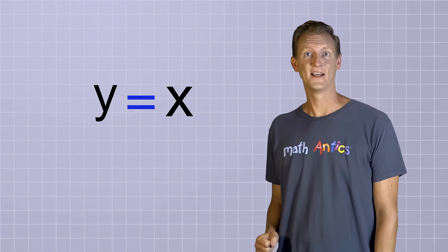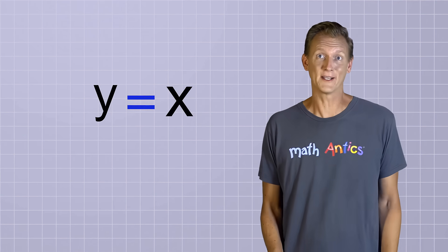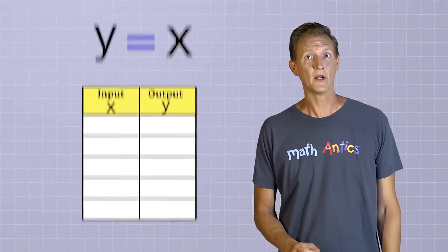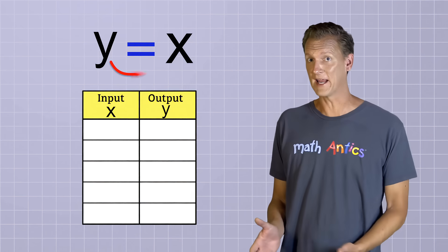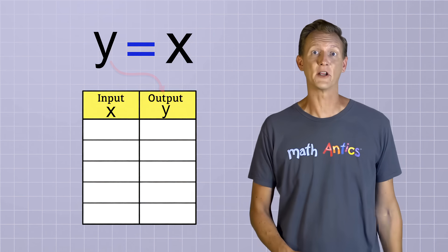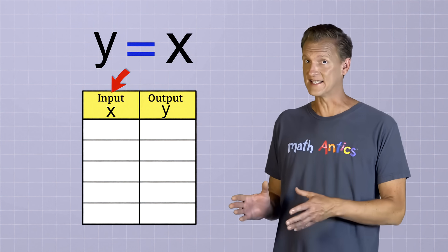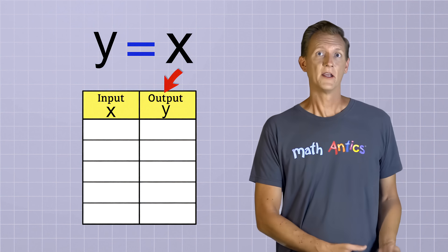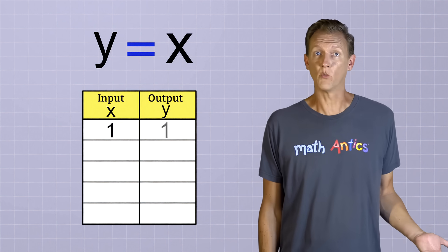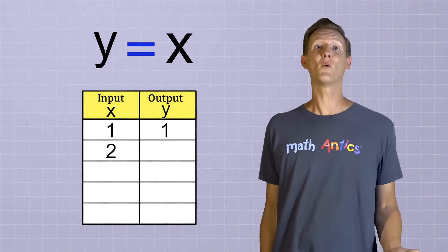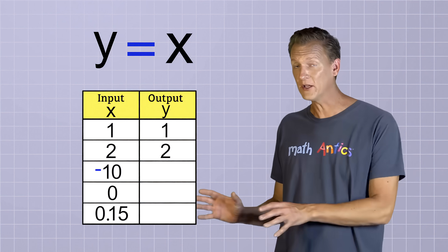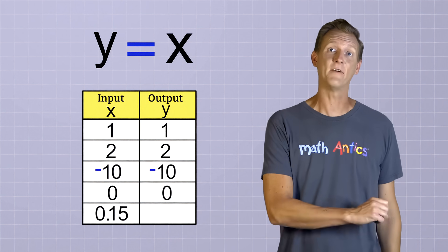The best way to learn about linear functions is to start with one of the most basic linear functions of all: y equals x. That's such a simple equation that you might be puzzled by it at first. But remember, the y variable is simply the output of the function and the x variable is the input. So all this equation is telling us is that the input is exactly the same as the output. If x is 1, then y is also 1. And if x is 2, then y is also 2. No matter what value you put into the function, you get the exact same value out.